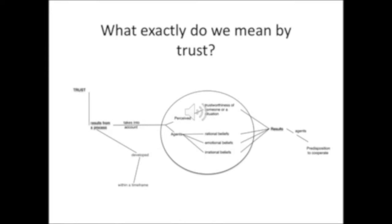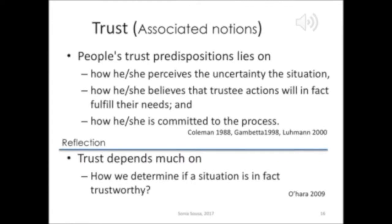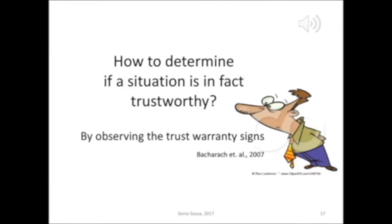Trust is a result from a dynamic process that evolves through time. This process takes into account certain signs that help us perceive if someone or a certain situation is trustworthy or not. The results of these perceptions are based on our willingness to interact or not interact with that person. People's trust positions rely much on how we perceive certain situations, and how we believe that someone or something will in fact fulfill our needs. This leads us to be more or less committed to the process. Trust depends much on how we determine if the situation is in fact trustworthy or not.